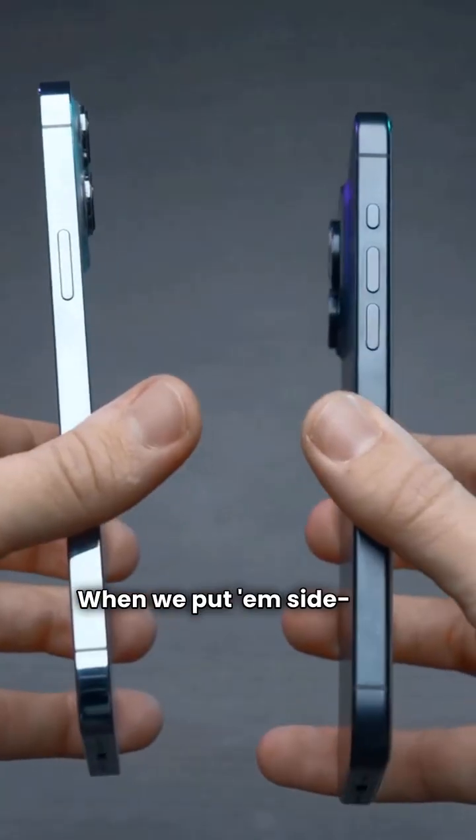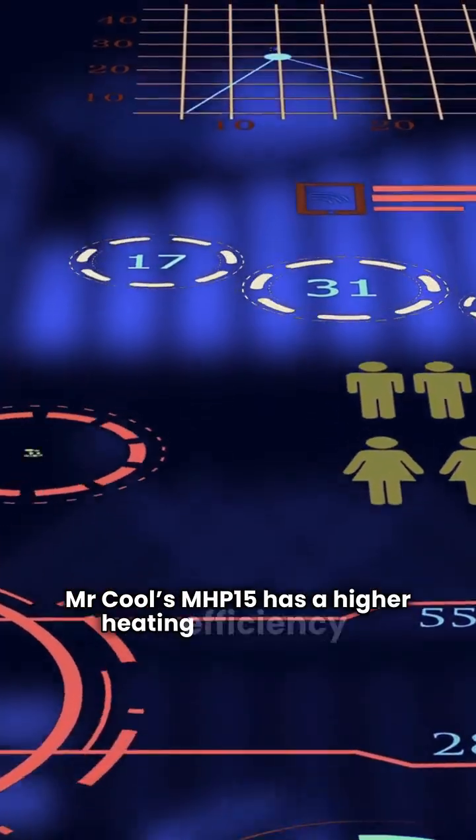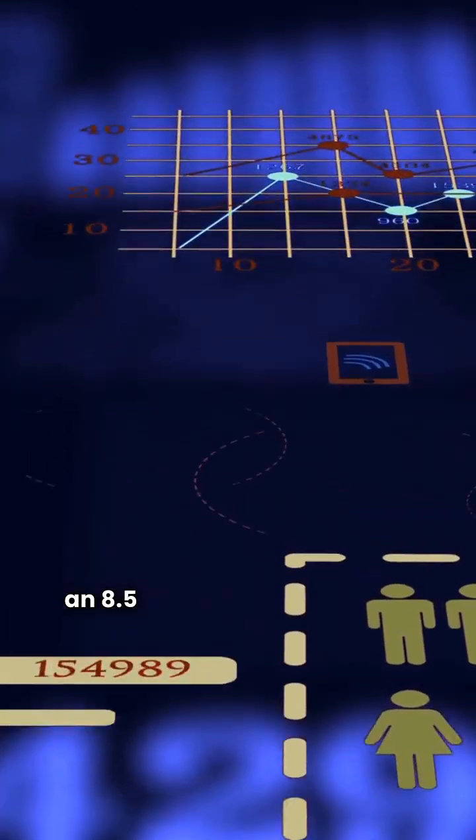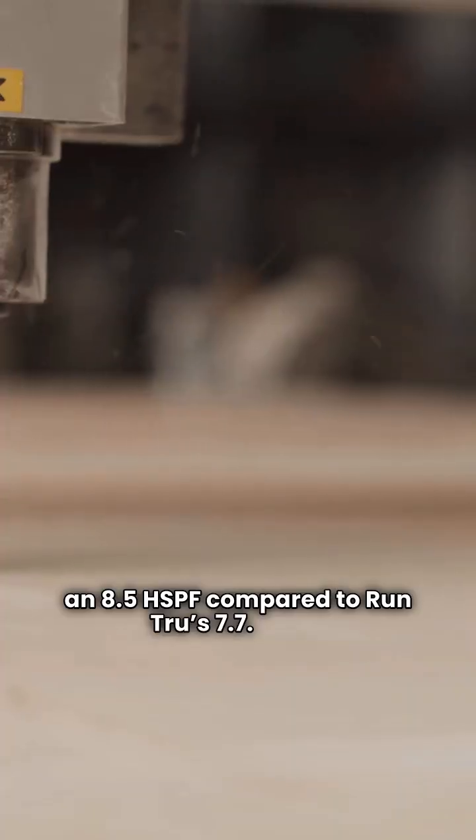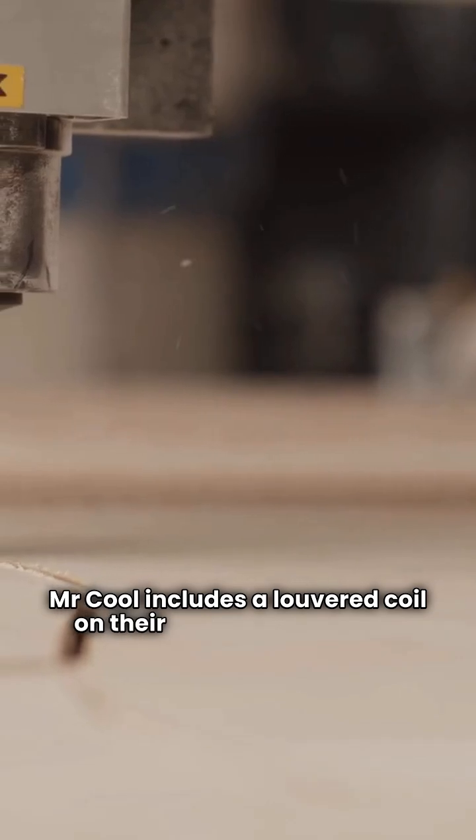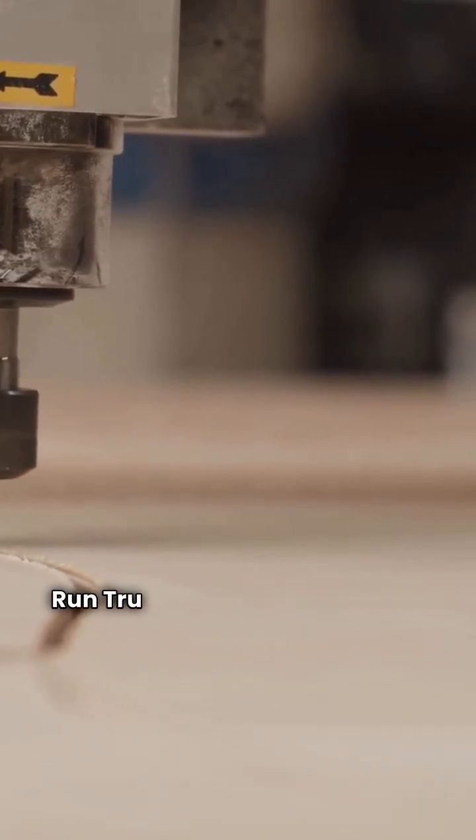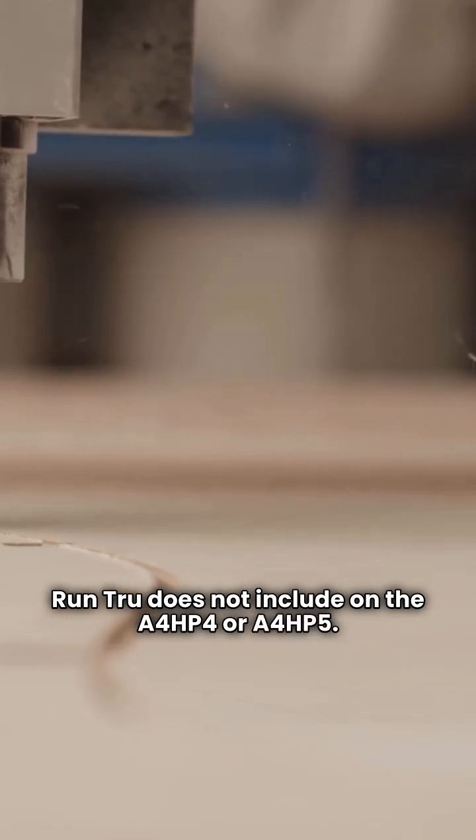When we put them side by side: Efficiency - Mr. Cool's MHP15 has a higher heating efficiency with an 8.5 HSPF compared to Run True's 7.7. Build - Mr. Cool includes a louvered coil on their basic model which Run True does not include on the A4HP4 or A4HP5.